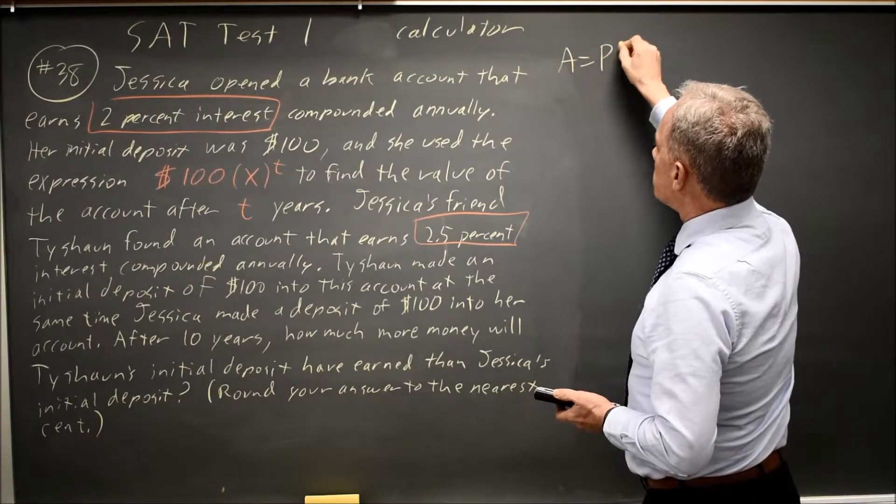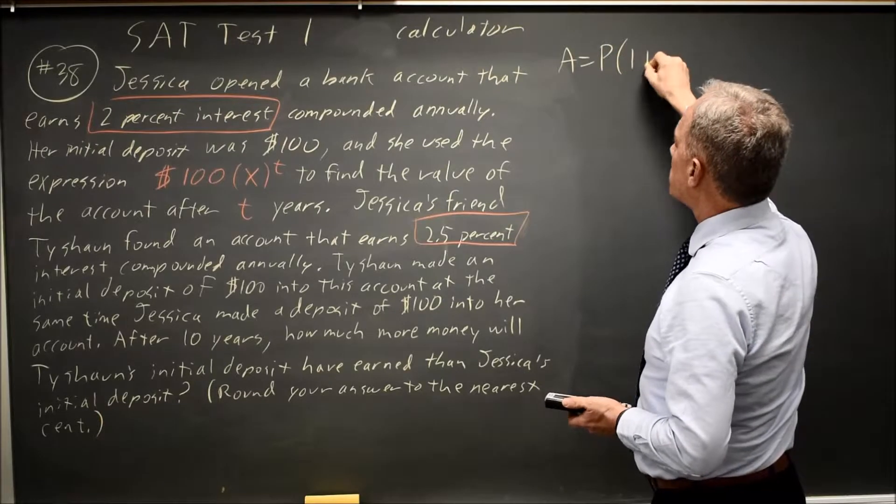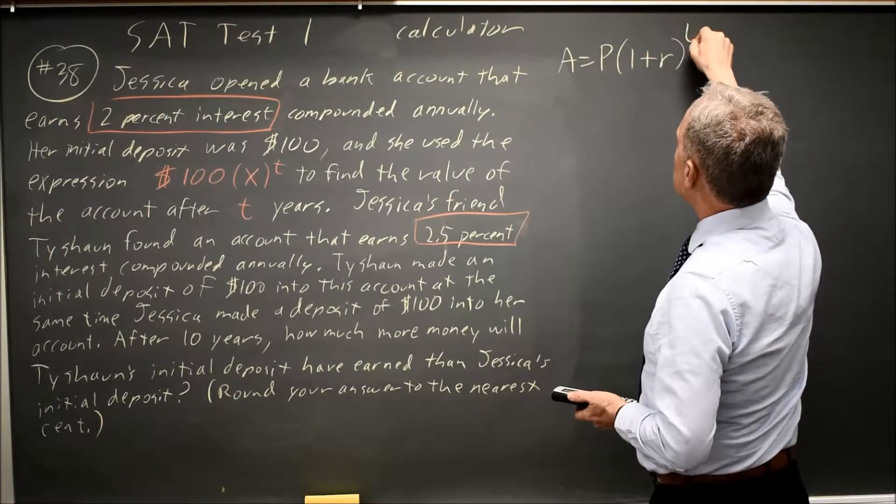Your amount equals your principal. So the amount at time T is the principal, your starting amount, times 1 plus R, your interest rate, to the T.